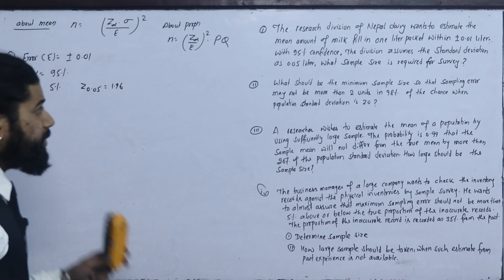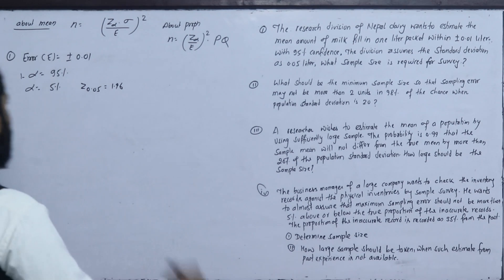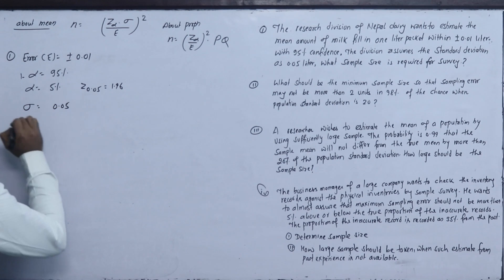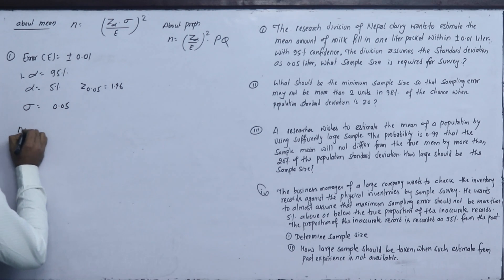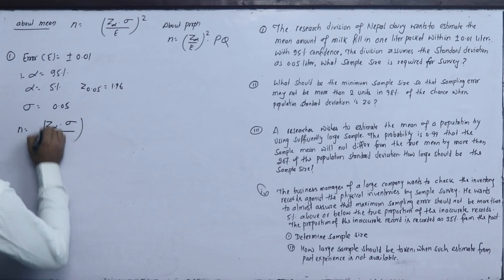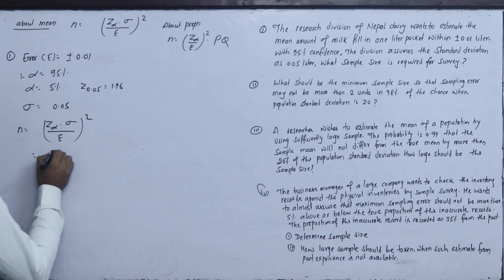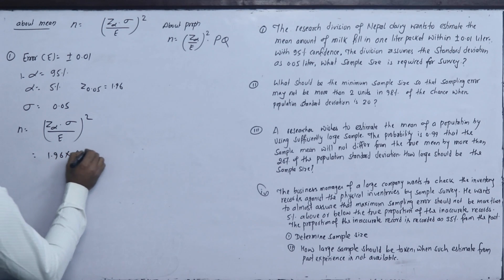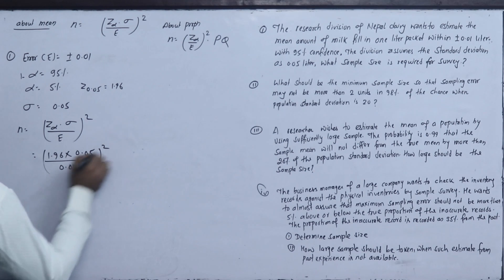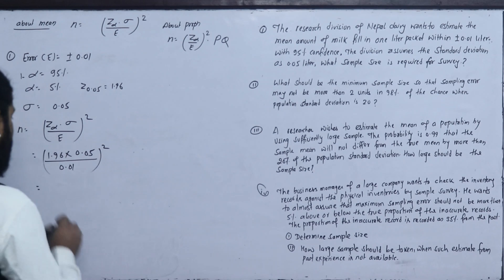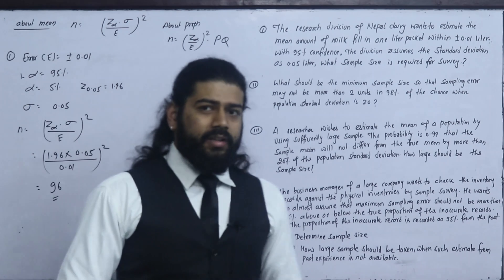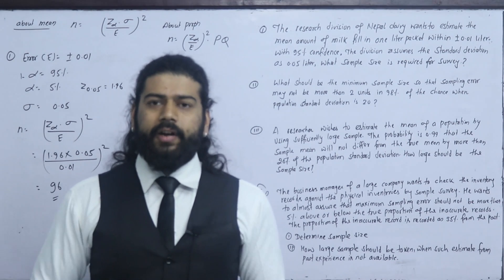The division assumes the population standard deviation σ = 0.05 litre. What sample size is required? Using n = (z-alpha × σ / e)² = (1.96 × 0.05 / 0.01)² ≈ 96. So we can collect and study 96 samples.